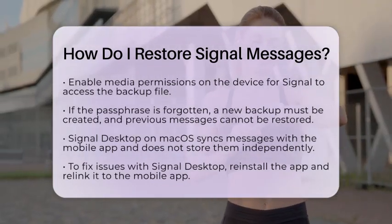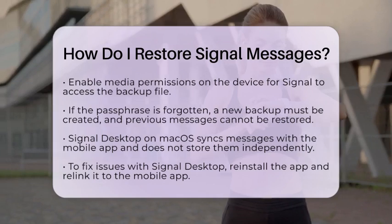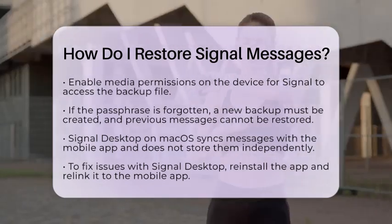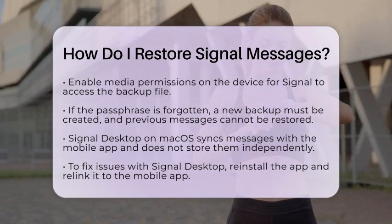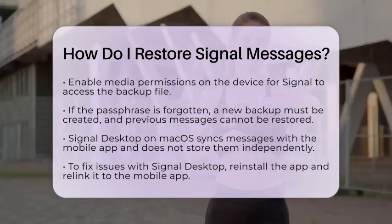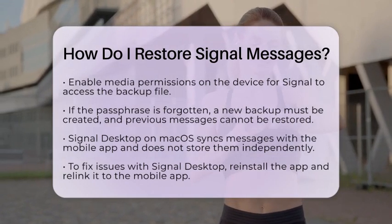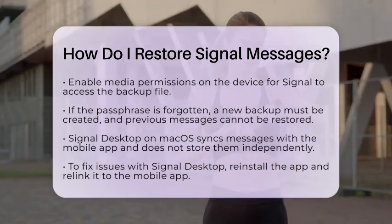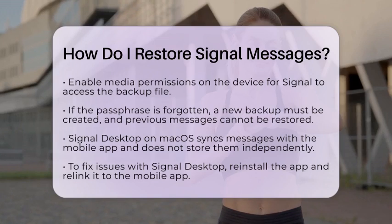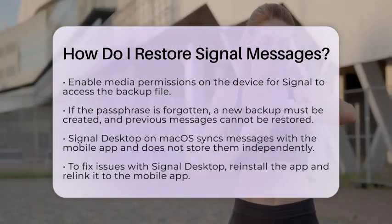To reinstall on macOS, delete the Signal app from the Applications folder and remove local data from the Library/Application Support/Signal directory. After reinstalling, relink your desktop client to your phone, which will sync your message history. Keep in mind that this process does not restore deleted messages but ensures your desktop has the current messages from your phone.